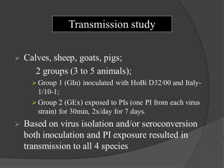The next question was: since we can make animals persistently infected with Hobi-like virus, how good are they at transmitting it? We had two one-hour contact sessions per day for a week — putting PI animals with naive calves, sheep, goats, and pigs. Based on virus isolation and/or seroconversion, both inoculation and PI exposure resulted in transmission to all four species. It was particularly concerning to see transmission to pigs. We didn't get clinical signs or virus isolation from pigs, but we did get a good serological response. Hobi-like PIs transmit the virus just like BVD PIs.